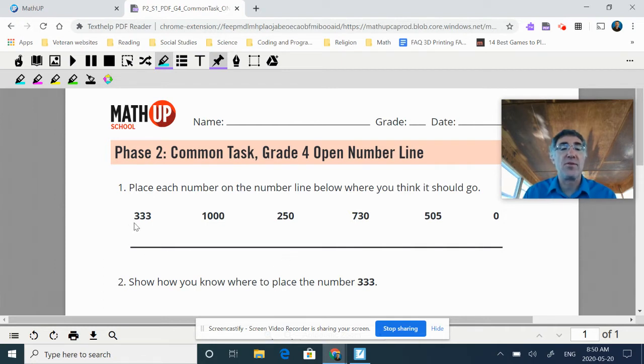And so when I look at this, I see 333, 1,000, 250, 730, 505, and zero.